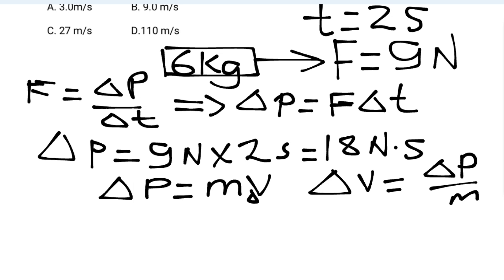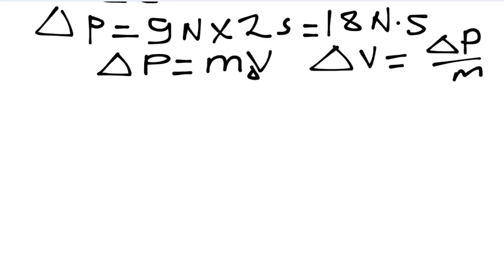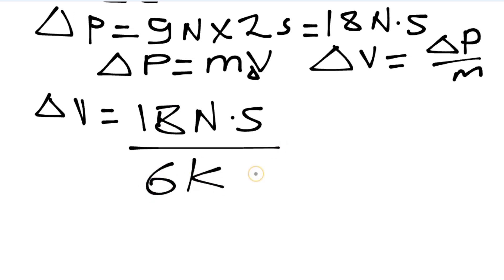Change in velocity equals change in momentum over mass. The change in momentum is 18 Newton seconds, the mass is 6 kilograms. So change in speed equals 18 Newton seconds over 6 kilograms, which equals 3 meters per second.